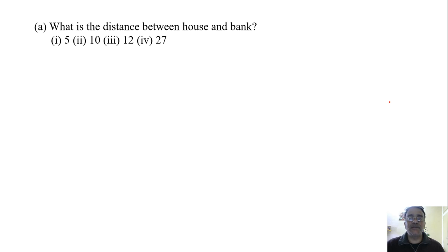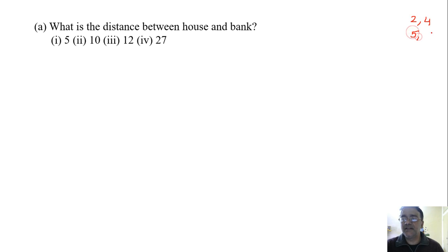So the first coordinate is (2,4), writing here: 2,4 then 5,8 then 13,14 and the last one is 13,26. These are the coordinates of house, bank, daughter's school, and office.